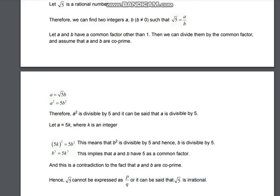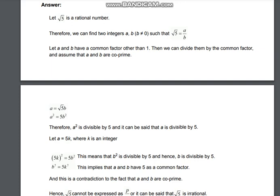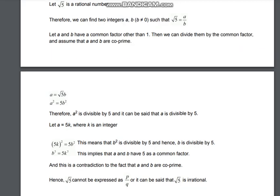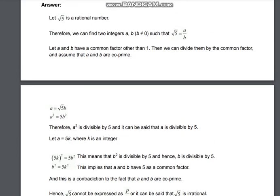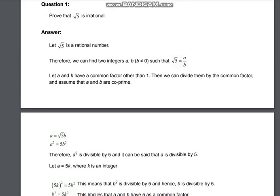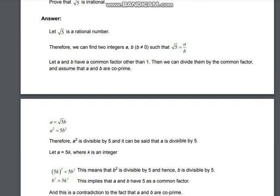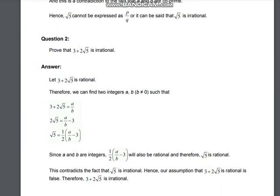And root 5 is an irrational number. A rational number is one which can be represented in p/q form, but root 5 cannot be represented in p/q form. Therefore, root 5 is an irrational number. Once again, see this question — it is an important question. I am giving stress every time on this.